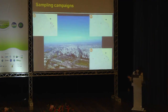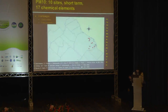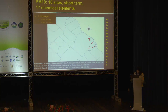I will briefly describe the three campaigns in which we collected particulate matter in the metropolitan area of Buenos Aires. The first campaign consisted of two sampling periods, one in winter and one in summer. In each season we collected a total of 24 PM10 samples at 10 sampling sites located in the center of the city. In these samples we determined the concentration of 17 metals and metalloids.